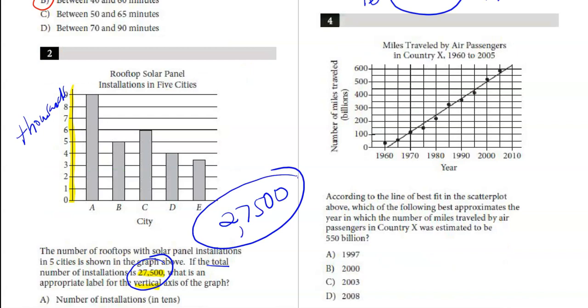Number four, according to the line of best fit in the scatter plot above, which of the following best approximates the year in which the number of miles by air passengers was estimated to be 550 billion? So I'm going to go up here to the graph and it looks like 550 billion is this line right here, and that is approximately somewhere around in there. Now looking at the horizontal axis, it looks like each line represents five years, so this line in the middle right there is 2005. So we're a little bit before that, so I'm guessing maybe 03. The correct answer there would be C.